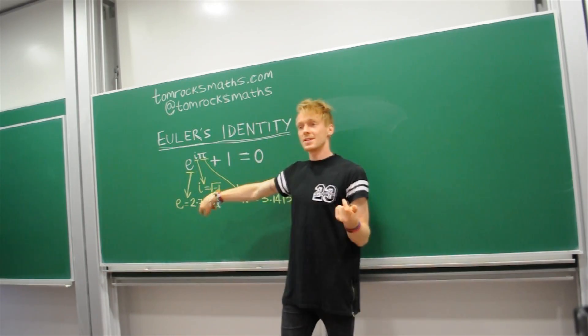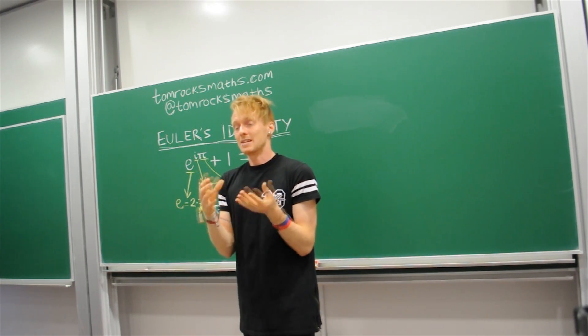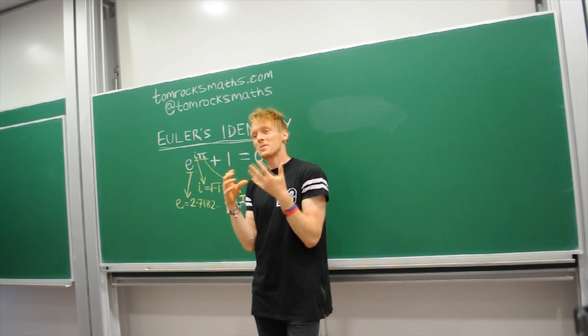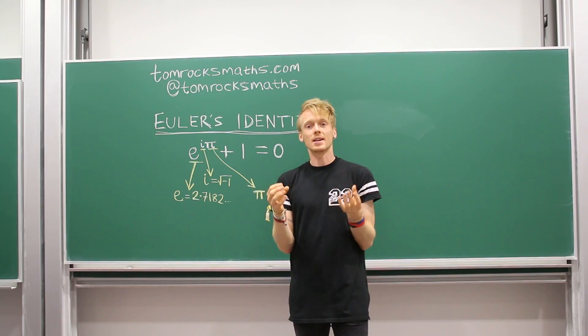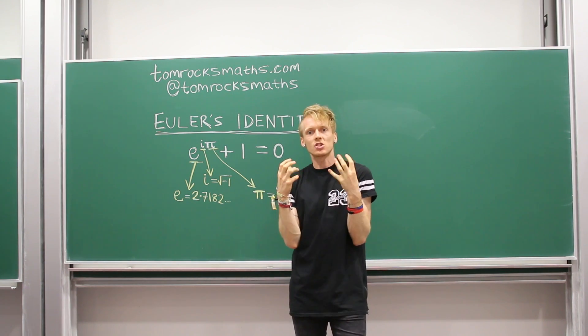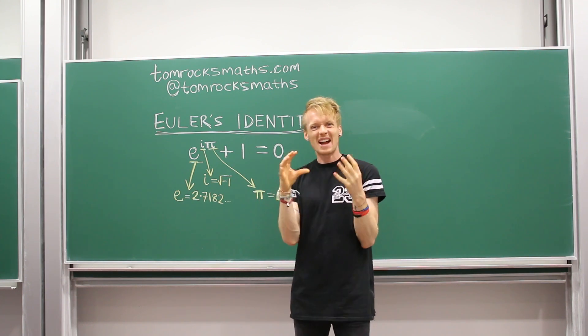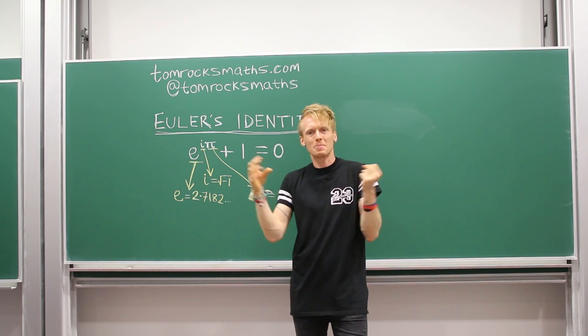E is 2.7182 plus a load of other numbers, it goes on forever. E is my favorite number and it pops up everywhere when you're thinking about growth, so growth rates and rate of change of objects or variables. E is sort of the natural rate of change that just pops up everywhere.